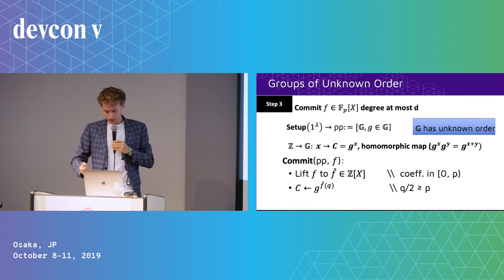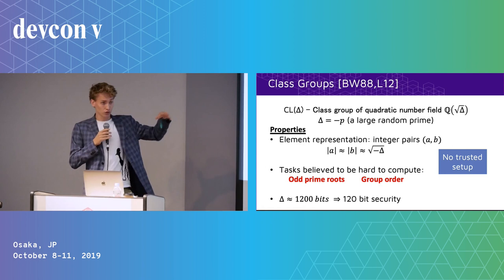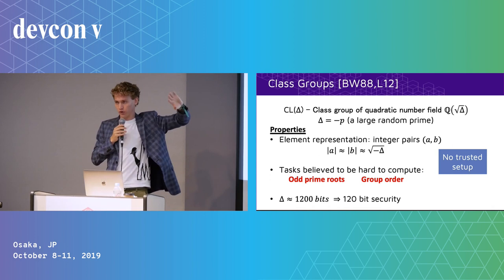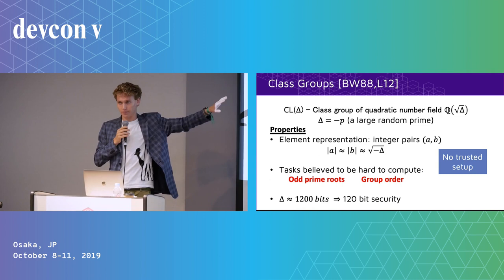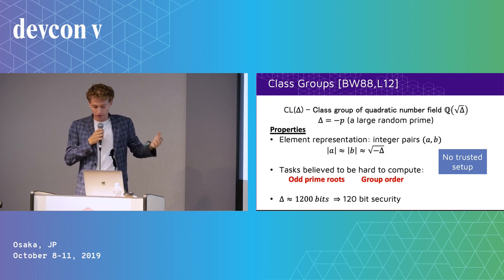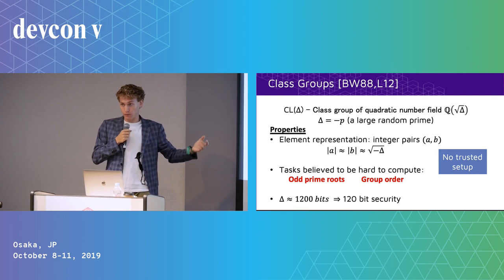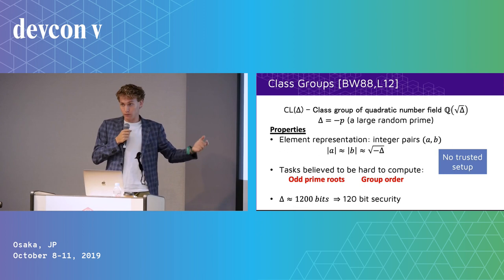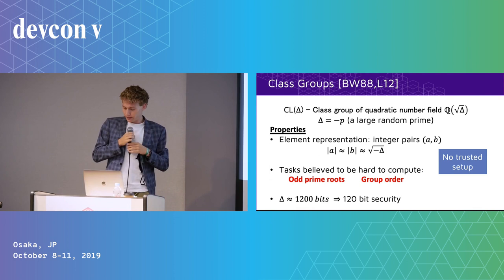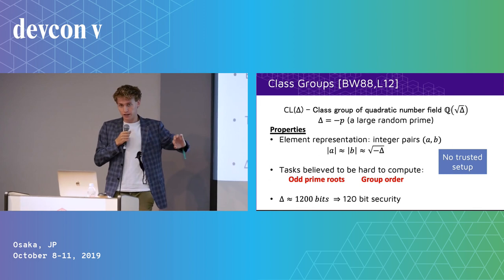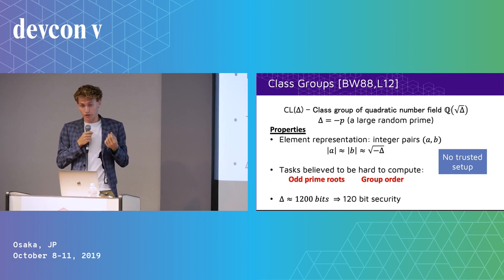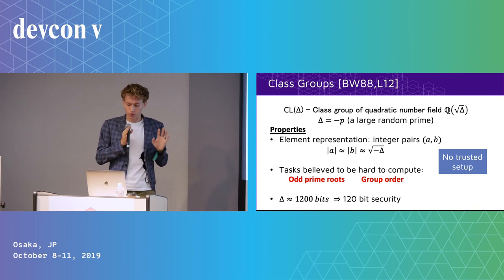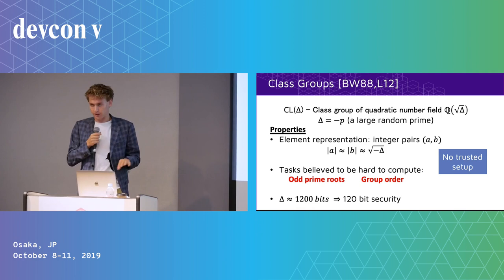What are these groups of unknown order? One you could use is class groups. In cryptography it's important to think about abstractions, so don't go looking up class groups — just use them as a tool. They are a group of unknown order: we believe computing the order is hard, and taking roots is hard. Most importantly, they do not require a trusted setup — I can generate this group just once with no trusted setup. Compared to elliptic curves, note that elliptic curves are not an integer commitment because I do know the order, so I could reduce a large integer mod the order. Groups of unknown order need to be quite large to be secure, but that's something we have to deal with.